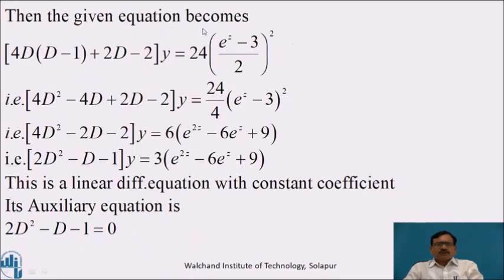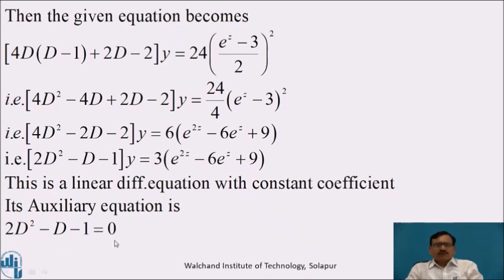Substituting these values, the given equation becomes [4D(D-1) + 2D - 2]y = 24 · ((e^z - 3)/2)². Simplifying: (4D² - 4D + 2D - 2)y = 24/4 · (e^z - 3)², that is (4D² - 2D - 2)y = 6(e^z - 3)². Dividing throughout by 2: (2D² - D - 1)y = 3(e^{2z} - 6e^z + 9).